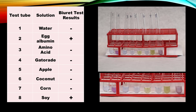Observe the test tubes over a white piece of paper. Blue solution indicates the absence of protein, or a negative result. Violet solution indicates the presence of protein, or a positive result. Our test today shows that egg albumin and soy milk test positive for protein.